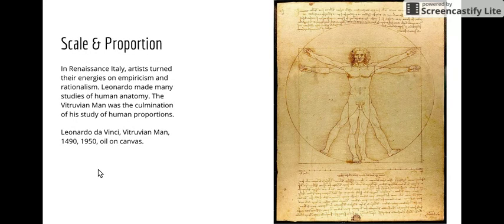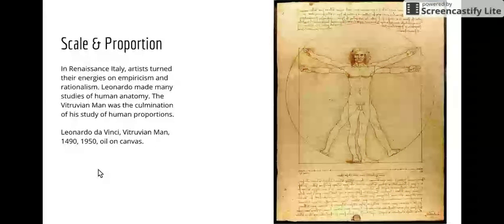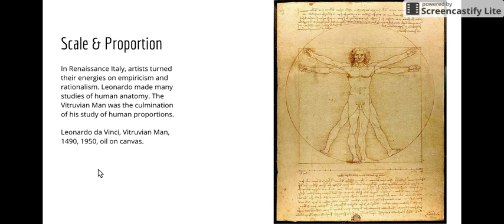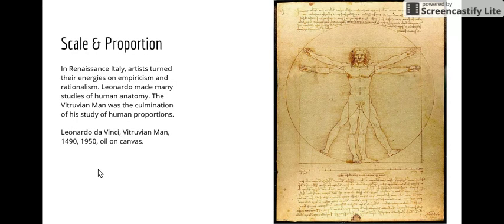Leonardo made many studies of human anatomy, even going to the morgue and studying cadavers. The Vitruvian Man was the culmination of his study of human proportions — an ideal way to represent the actual proportions of the human body: how many heads tall is the figure, how wide is the head, how tall is the hand, things like that.